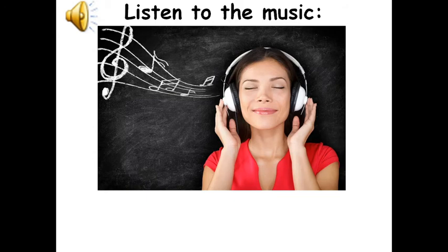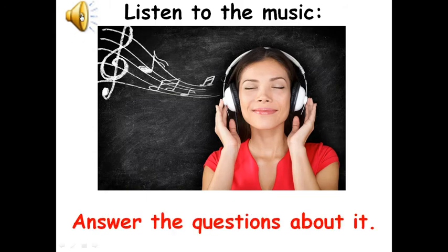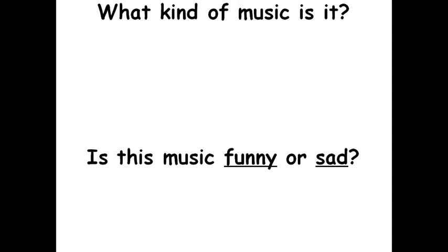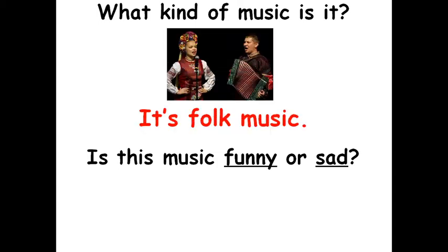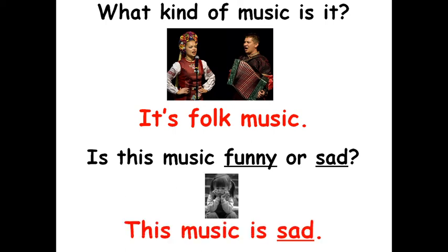Next composition. Listen and answer the questions. Okay, what kind of music is it? It's folk music. Right, you are. Верно. Это народная музыка. В данном случае это была колыбельная. Is this music funny or sad? Translate, please. Переведите этот вопрос. Эта музыка веселая или грустная? Make an answer. Составляем ответ. This music is sad. Верно. Именно в данном случае была грустная музыка.